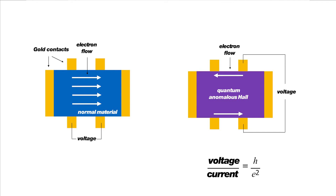Stranger still, this voltage would be related to the current flowing through the material by a factor of Planck's constant divided by the charge of the electron squared, which is about 25 kOhms.